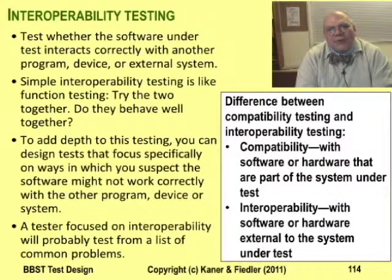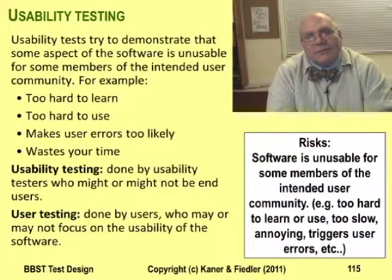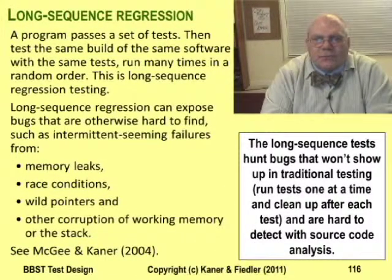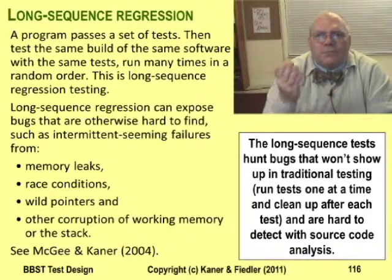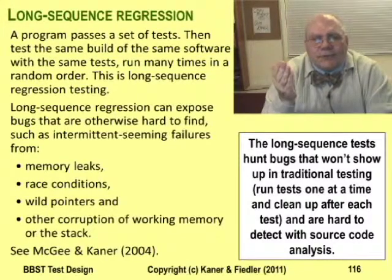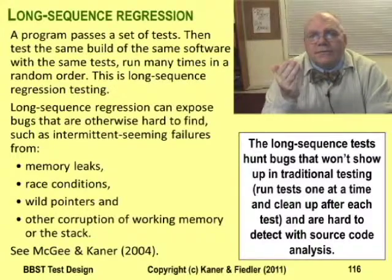Interoperability testing checks how this product interoperates with others. Usability testing is focused on the risk that the program is too hard to use. Long-sequence regression is the simplest of the long-sequence tests — you reuse old tests, run them in a long randomized order, but without resetting the software before you run the next test. Consider a memory leak: you run the function once, no problem; twice, no problem; but each time the function uses a little space and doesn't free it. If you run it a few hundred times, the program runs out of memory. You won't find a bug like that running a simple test that executes the code once — you have to run a long sequence that executes that function many times.